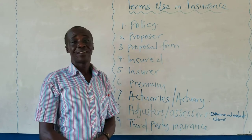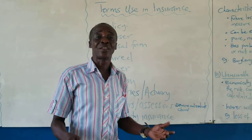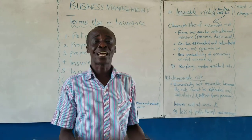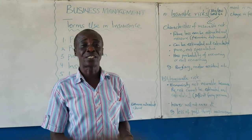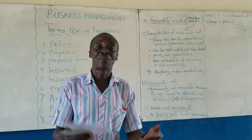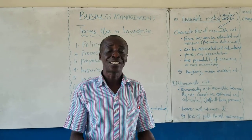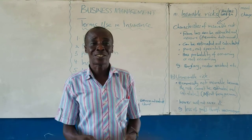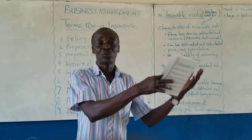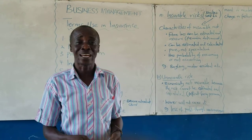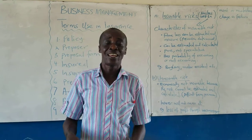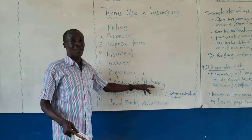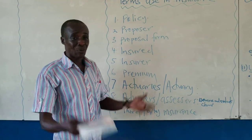The actuaries look at all those things and determine how much you are supposed to pay. Some of you who are doing elective mathematics as business students can choose to study actuarial science at university — for example, the University of Cape Coast has a program called actuarial science. You must be very good at mathematics. Those who did elective maths are the ones who will be allowed to study actuarial science and become actuaries.